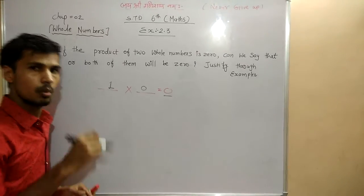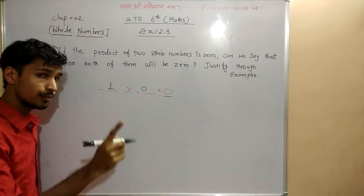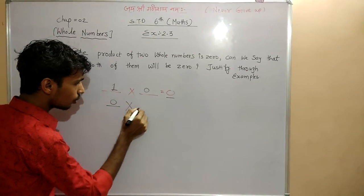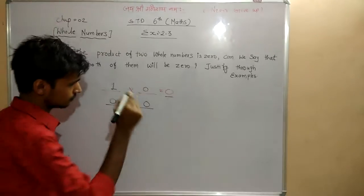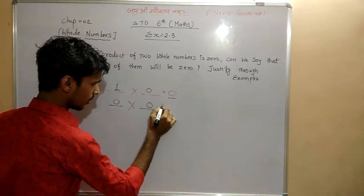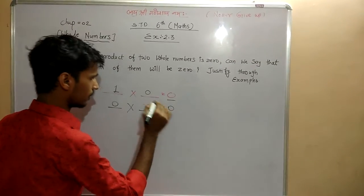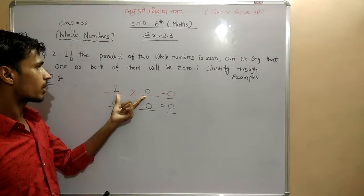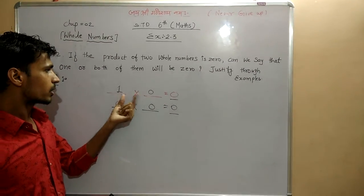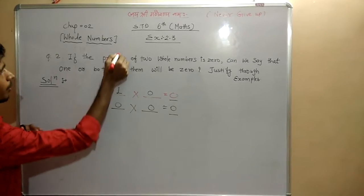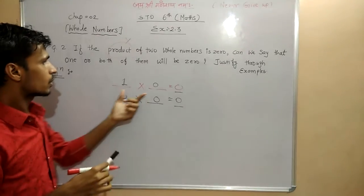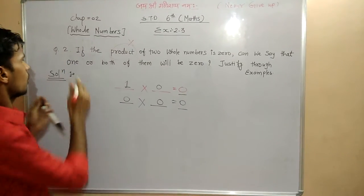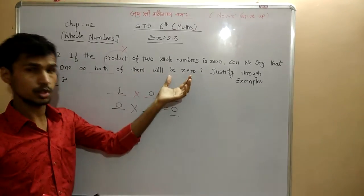Now, if I am taking both values as 0, then the product is also 0. So what can we say? Is that one or both of them will be zero?